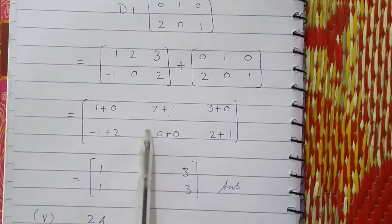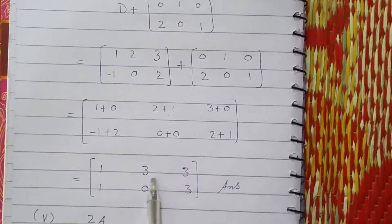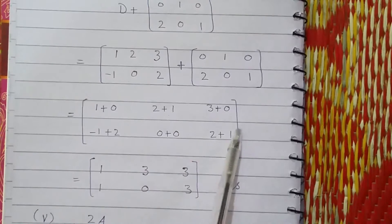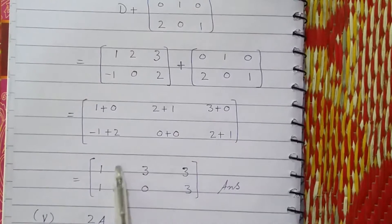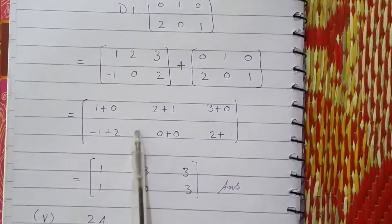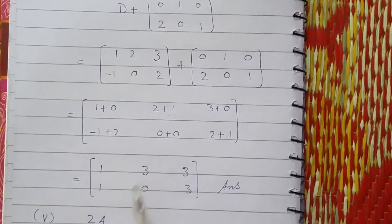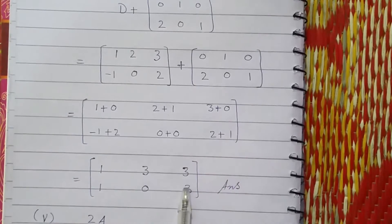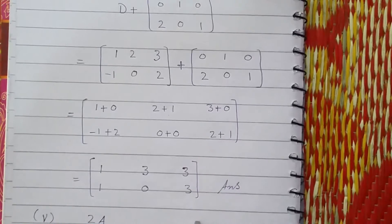1 plus 0 is 1. 2 plus 1 is 3. 3 plus 0 is 3. Minus 1 plus 2 is plus 1. 0 plus 0 is 0. 2 plus 3. 2 plus 1 is 3. So that is the end of part 4.